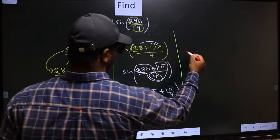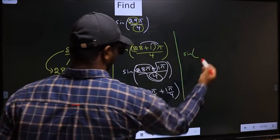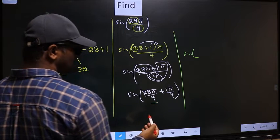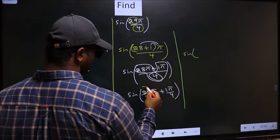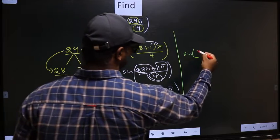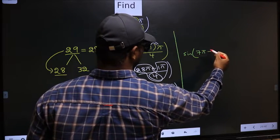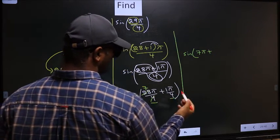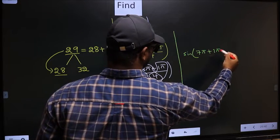Next, sine of—now here you should cancel. 4 ones, 4 sevens, so we get 7π plus, here no change, 1π/4.